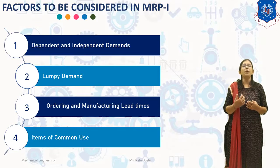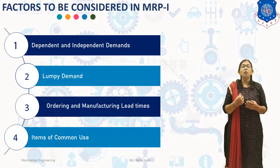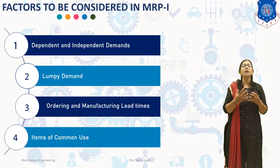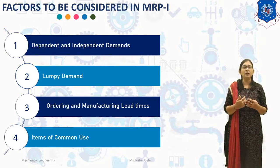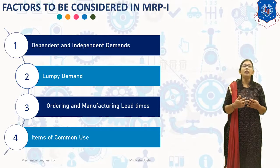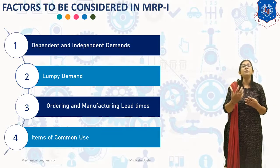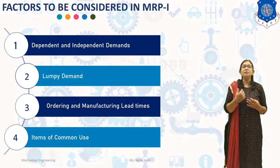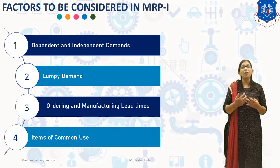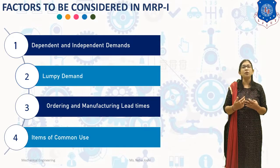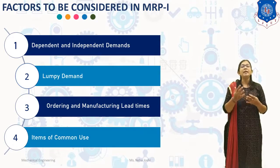The third factor is ordering and manufacturing lead time. The lead time for an item is the time required to complete an item from the beginning to the end. There are two types of lead time. Ordering lead time is the time required from the initiation of the purchase requisition to the receipt of the item from the vendor. Manufacturing lead time is the time required for the complete manufacturing of the item from start to finish. Precise estimation of lead time is vital in correct MRP-1.